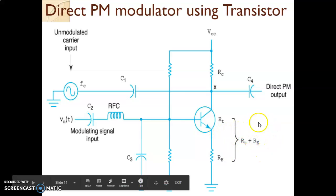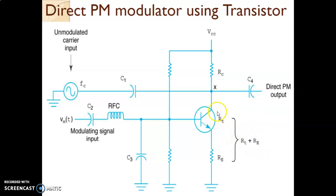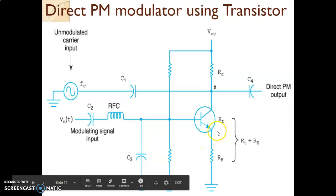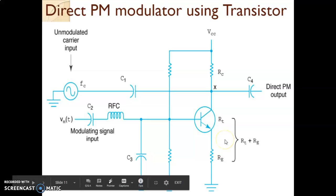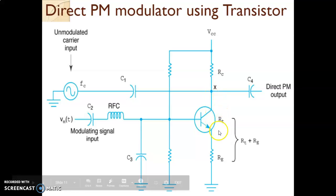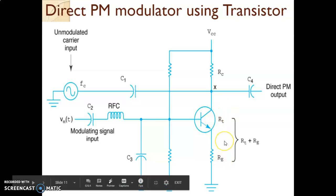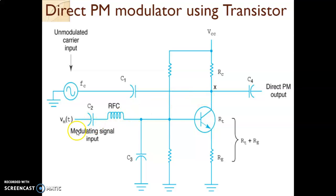When the current is changing, the resistance RT and RE is going to change — that is, RT plus RE is going to change. RT plus RE changes according to the conduction of the transistor, and the transistor conducts as per the modulating signal. Earlier, when no modulating signal was there, C1 and RT plus RE were producing a phase shift of 45 degrees. Now, when the modulating signal is applied, the phase shift will change because the transistor is conducting, current is changing, resistance changes, and because of that the phase of the carrier signal changes in accordance with the modulating signal. This is the definition of phase modulation.